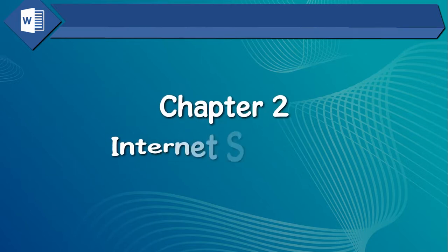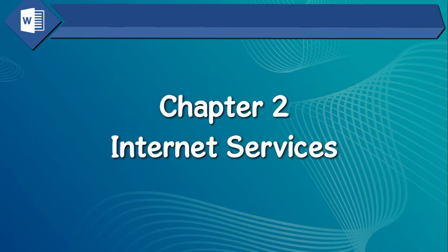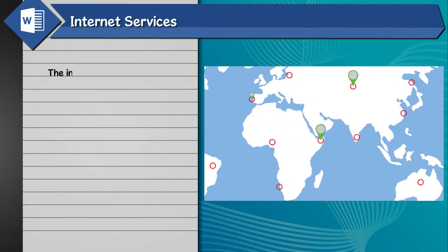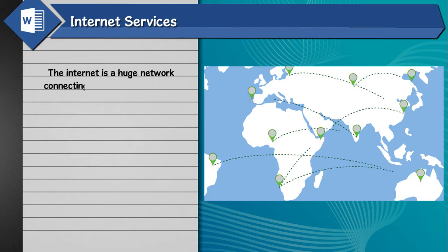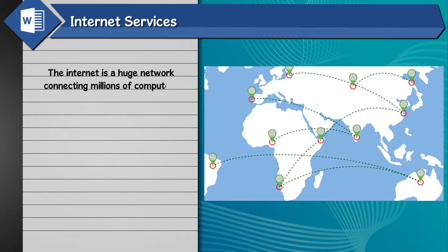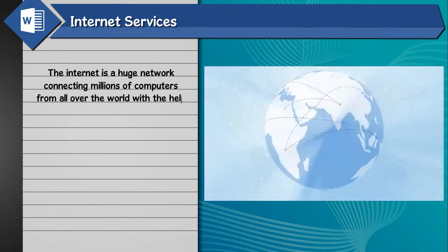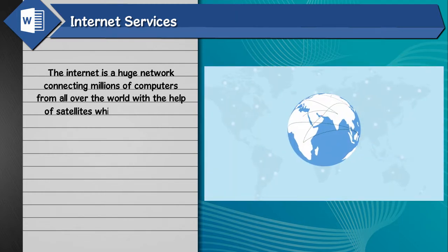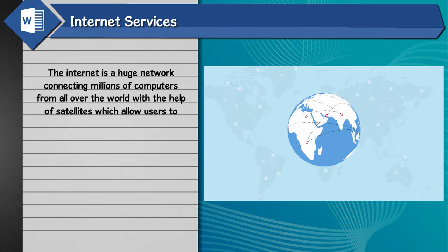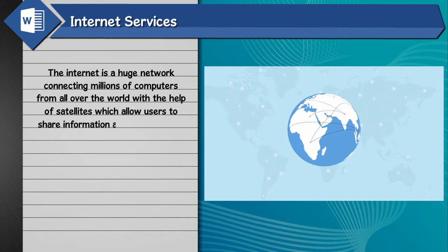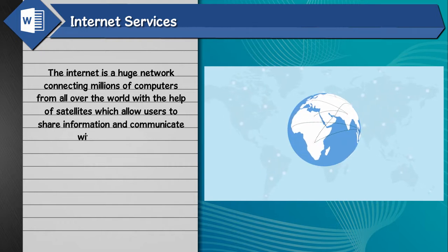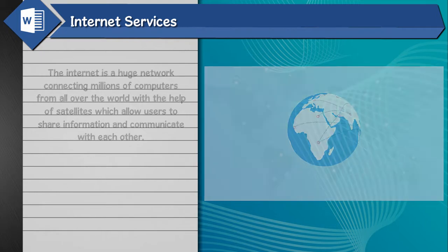Chapter 2: Internet Services. The Internet is a huge network connecting millions of computers from all over the world with the help of satellites, which allow users to share information and communicate with each other.